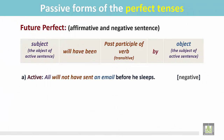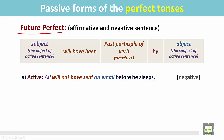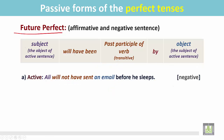See the example: this is an active sentence in the future perfect, and it is negative. 'Ali will not have sent an email before he sleeps.' In this sentence, if we ask 'sent what?' we find the answer: 'an email.' An email is the object of the verb 'sent.' There is another verb in this sentence, 'sleeps,' but there is no object for this verb.